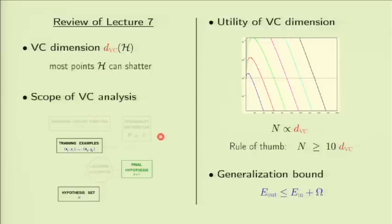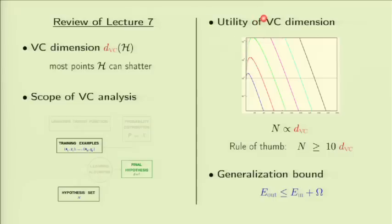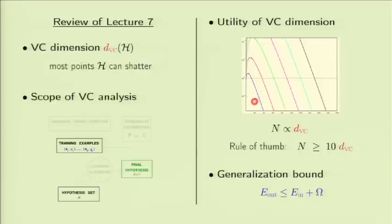We then went into a practical part, asking about the utility of the VC dimension in practice. Given a learning problem, you want to know how many examples — what size data set — you need to achieve a certain level of performance. We did this analysis by plotting the core aspect of delta, the probability of error in the VC bound, and found it behaves regularly. We focused on curves corresponding to different VC dimensions, working in the region where the probability of the bad event is small.